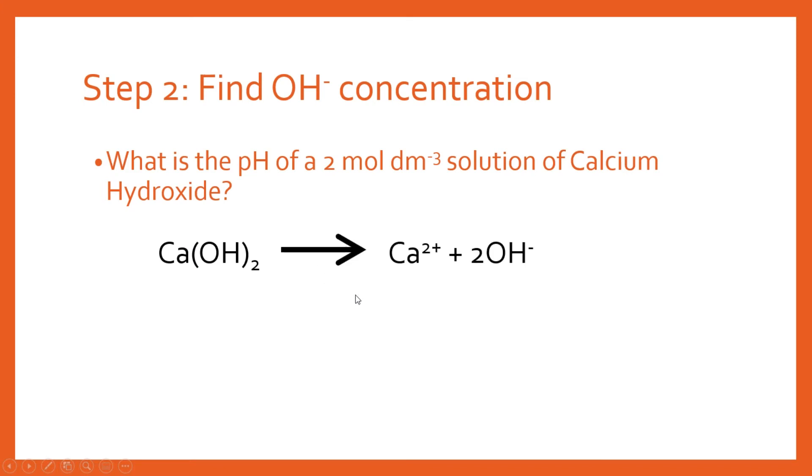Now this is going to dissociate and you're going to get the Ca²⁺ plus two OH⁻. So this is two hydroxide. And this is where it's really important.